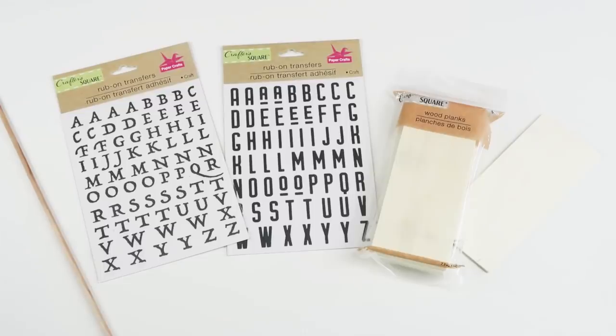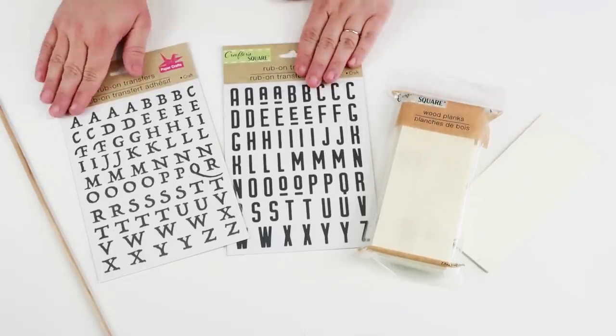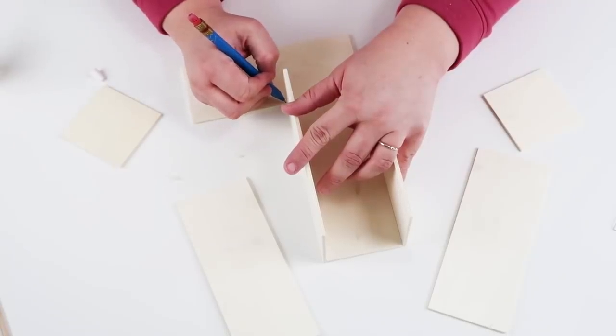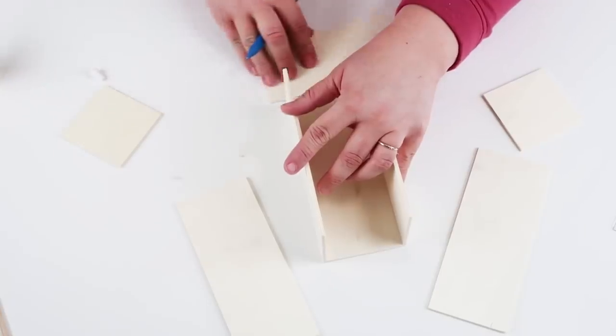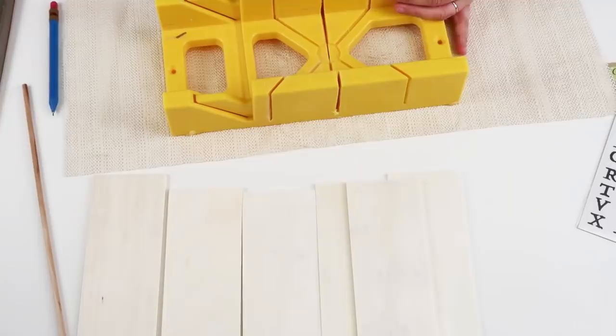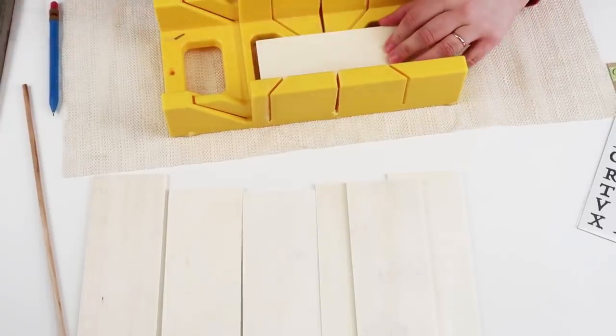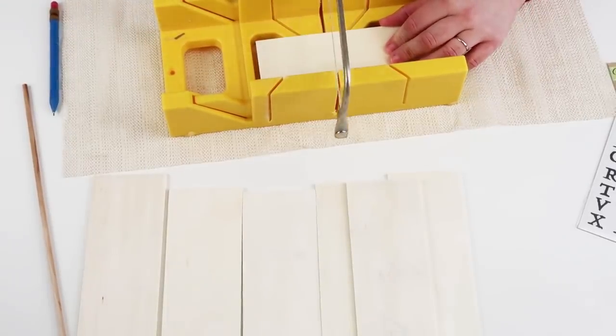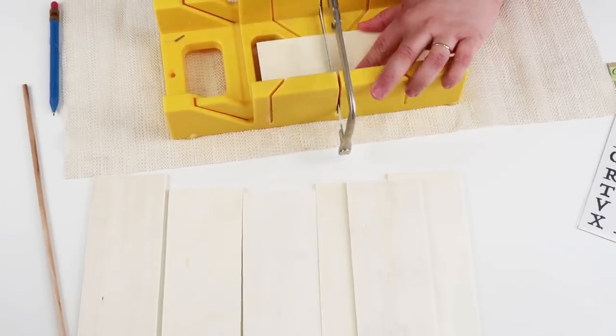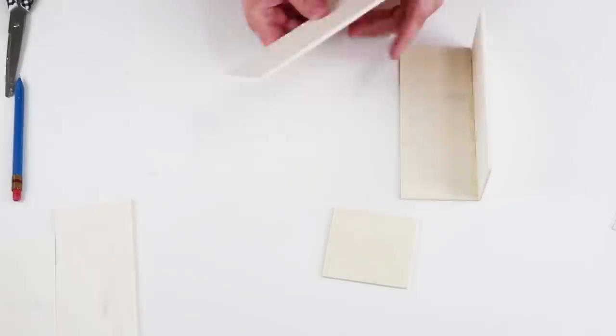For this DIY we're going to be using some of these wood planks and these two different fonts for rub-on stickers. I'm going to start by making my sides and my bottom of my box, and I'm just going to trace where I need to cut the sides of my box. This is really easy to do—I'm using my miter box to be able to cut these pieces. You could technically cut them with your scissors too, but honestly it would just tear your scissors up.